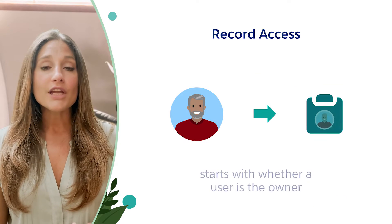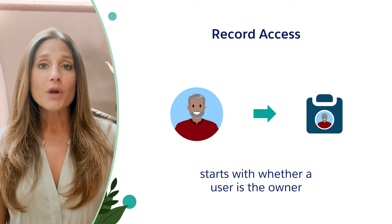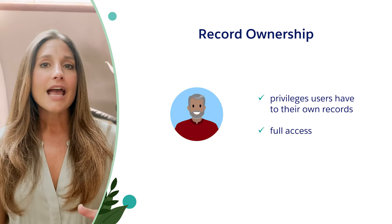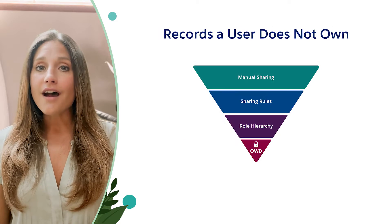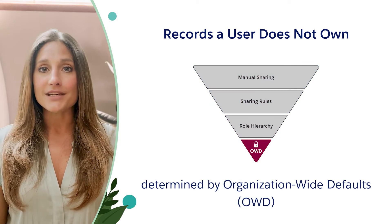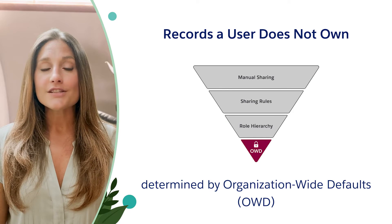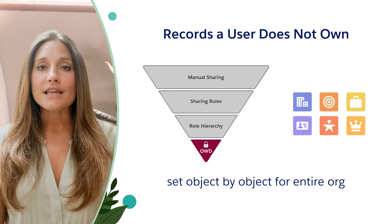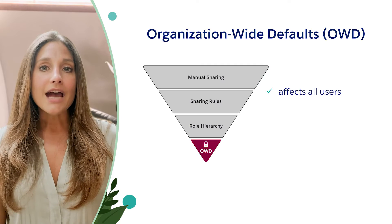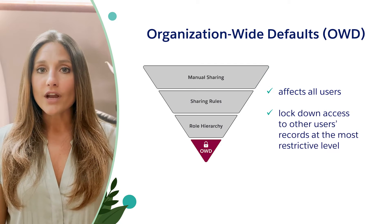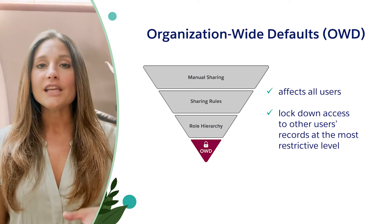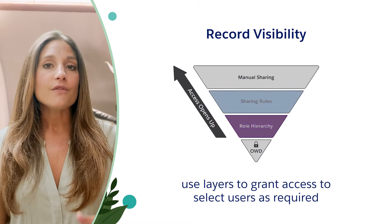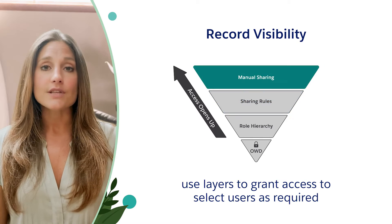Record access starts with whether a user is the record owner or not. Record owners have special privileges to their own records — this is called full access. Access to records a user does not own is determined by the organization-wide defaults, or OWDs, and this is set object by object. Org-wide means this will affect all users. Admins use OWDs to lock down record access to other users' records at the most restrictive level. Then admins can use different record level security tools and features to grant access to selected users as required.